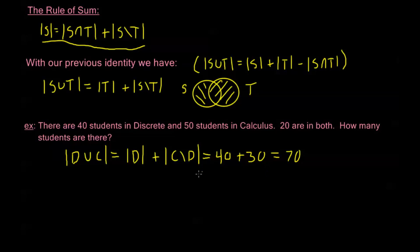We have one more formula for counting the union of two sets or events called the principle of inclusion and exclusion. It's a bit more complicated and deals with more than two sets. We're going to cover that in the next video — we'll see you there.